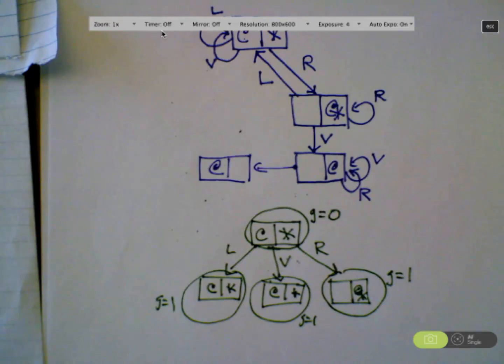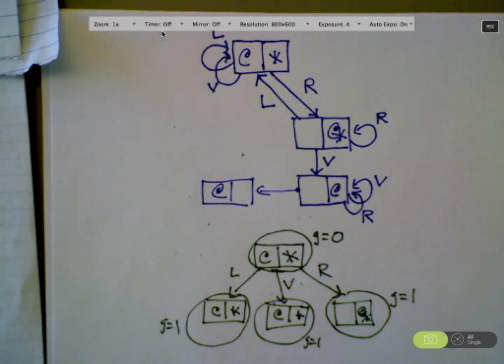We're talking about planning. We've been talking about state spaces. I think we talked about the little vacuum world example, where you've got the little robot in the world, and this is a very simple just two-room world, and there are different actions you can carry out that take you from one state of the world to another state of the world.